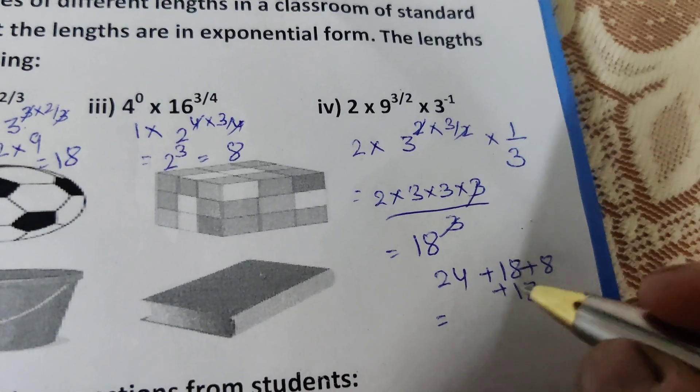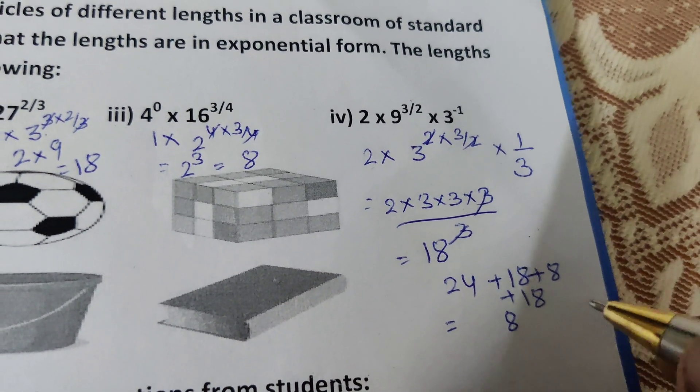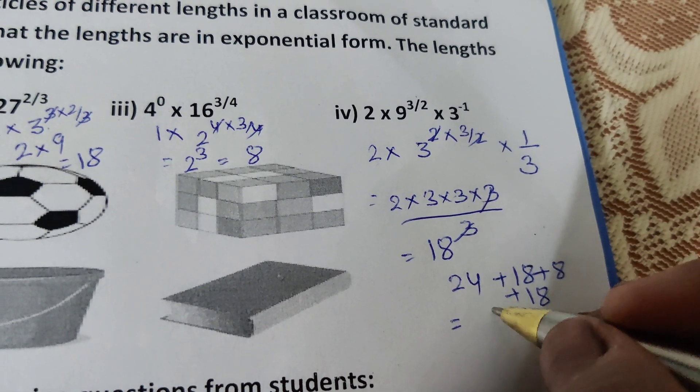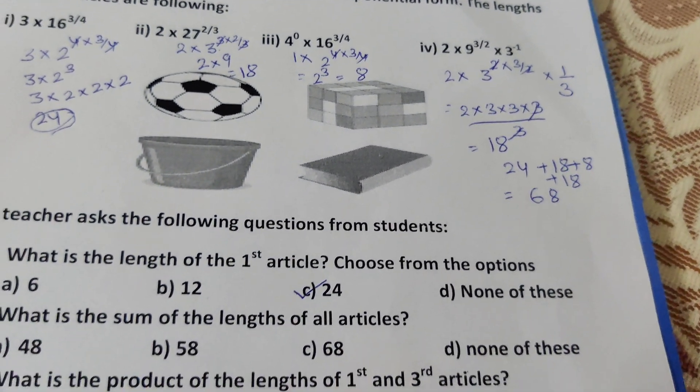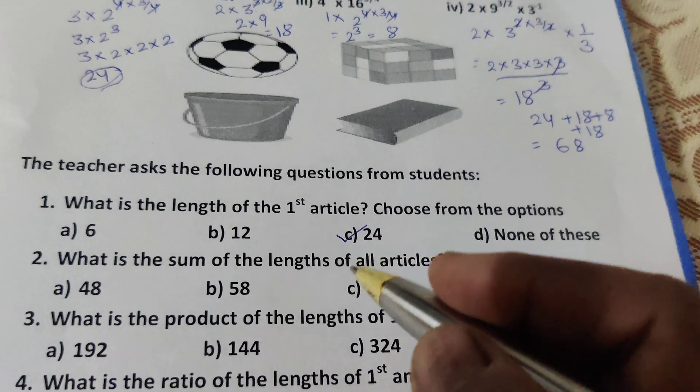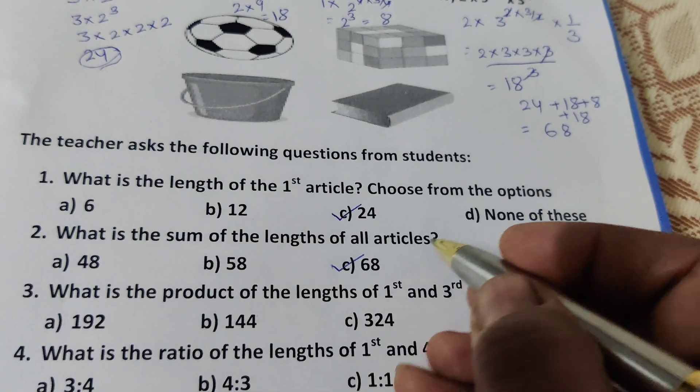So now 24 + 4 = 28, then 34, 56, 68. The total length is 68. Now option: 48, 58, 68, none of these. The right option is C, 68.